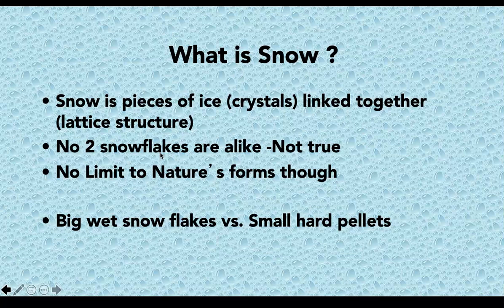We're going to talk about big wet flakes versus small hard pellets. What that comes down to is temperature. Snow that's just on the borderline of being rain is obviously going to be wetter. When it's much colder, you can get very small crystals — the powder, as they call it. And these pellets: there are a number of ways you get little snow pellets. Oftentimes the snow will melt a little bit, then harden back up, or several flakes will merge together. There are lots of different ways snow can come down.